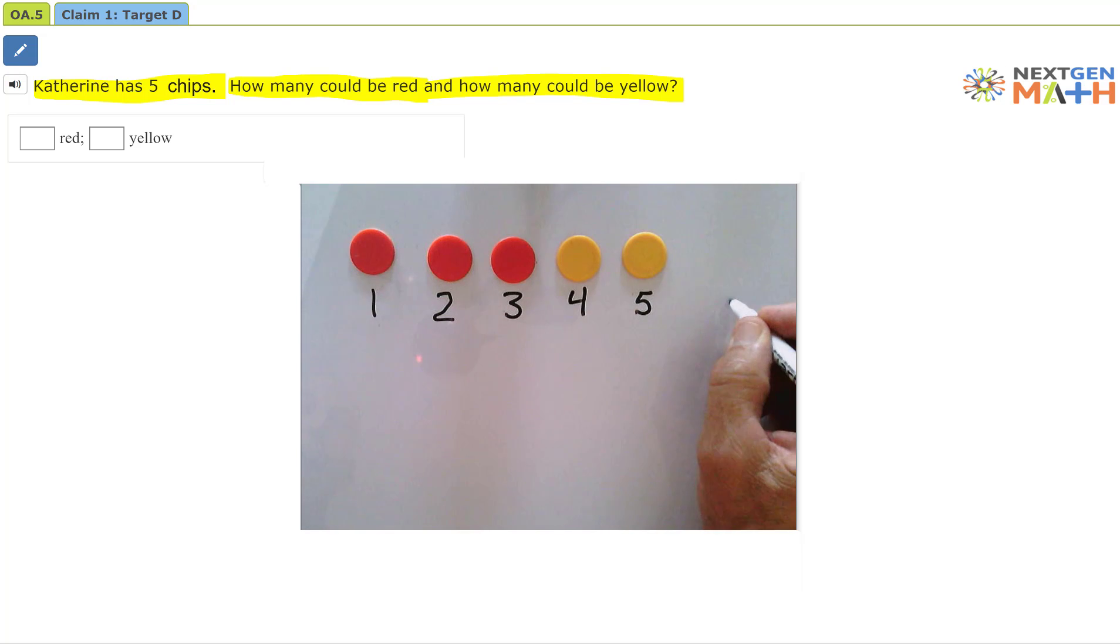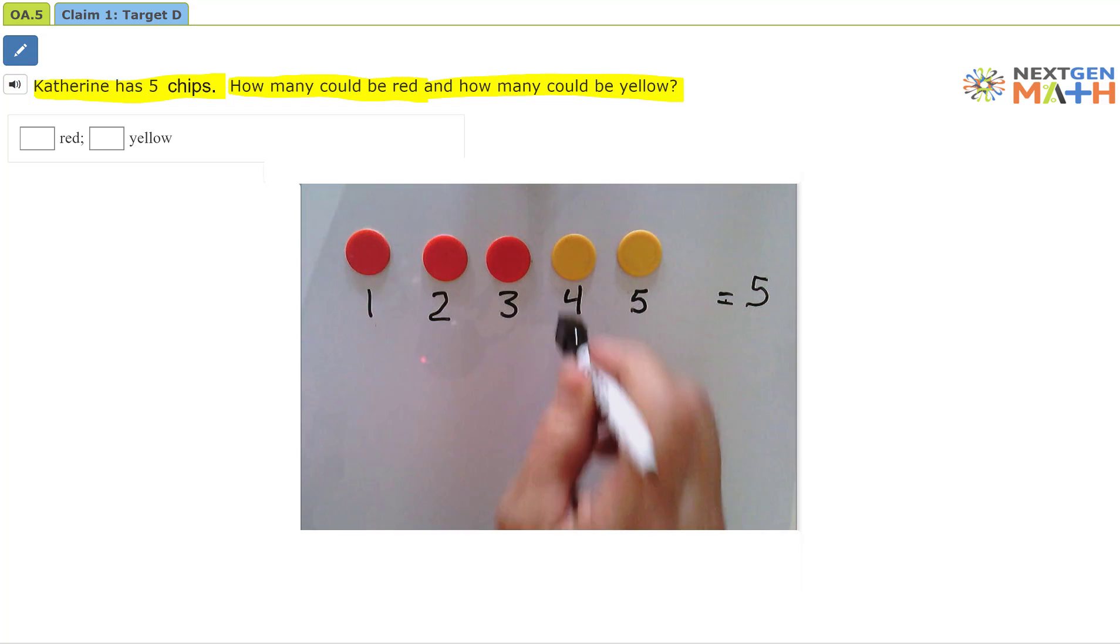So we know we have five chips, but how many could be red and how many could be yellow?